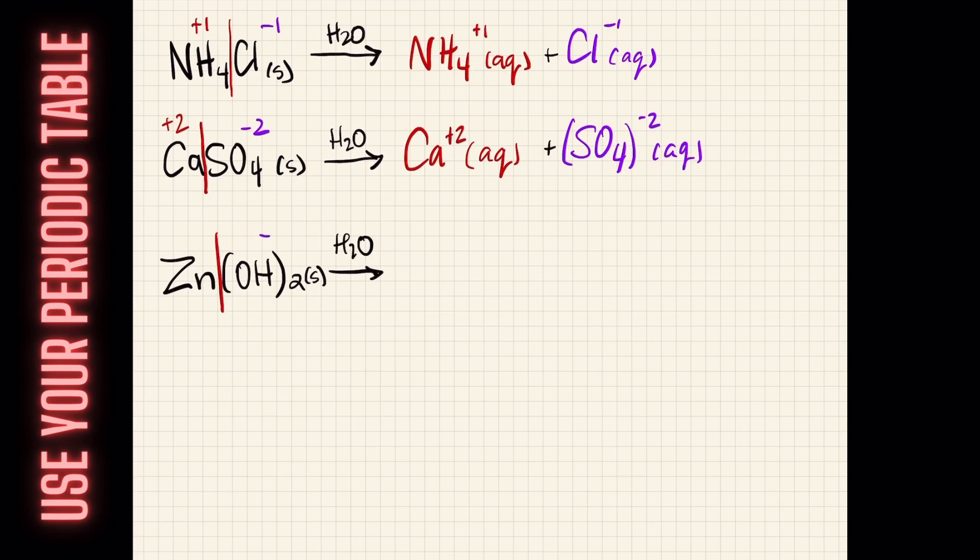With our last one, we have zinc hydroxide. Noticing we have 2 hydroxides, and each one is negative 1, which makes our zinc a positive 2. However, there's only 1 zinc, which is why you can see it written as Zn plus 2. But we have 2 moles of hydroxide that is going to be dissolved into our solution.